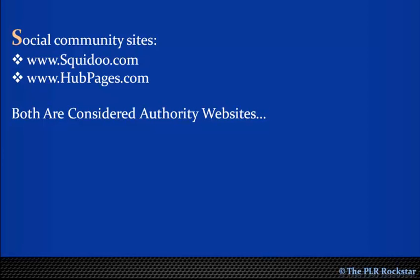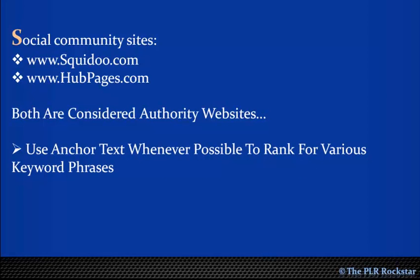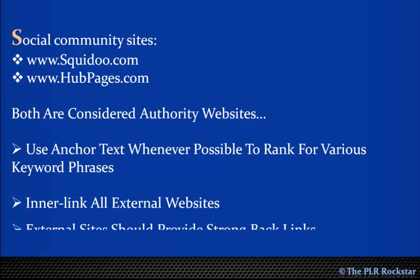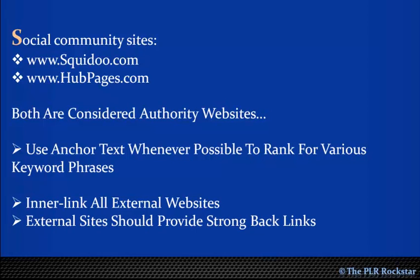When creating external websites on sites like Squidoo, HubPages, or on remotely hosted blog services like Blogger.com and WordPress.com, be sure to use anchor text whenever possible so that you are able to rank for various keyword phrases. Also, make sure to interlink all external websites — such as your Squidoo lens or HubPages hub — to your primary website or squeeze page. Each external site should provide one strong backlink to your main page.